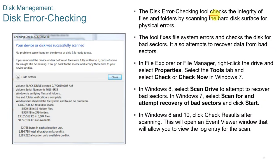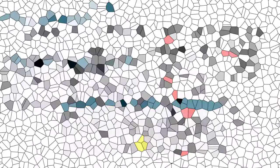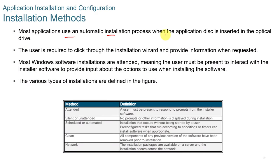Before purchasing or installing an application, verify system requirements including processor speed, RAM, OS version, hard disk space, software dependencies, graphics and display, network access, and any peripheral devices. Most applications use an automatic installation wizard. Most Windows software installations are attended, meaning the user must be present to interact with the installer. Installation types include attended, silent or unattended, scheduled, clean, or network installs. You can install from CD, DVD, or USB media. If the installation doesn't start automatically, browse the installation folder for the executable. Microsoft uses MSI (Microsoft Installer) or .exe files.